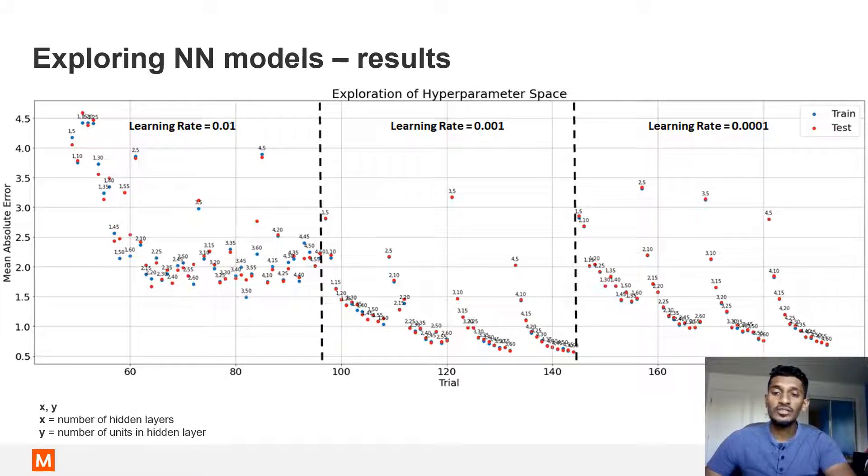However, the change from a learning rate of 0.001 to 0.0001 wasn't much, and so we will focus on this middle block for now.